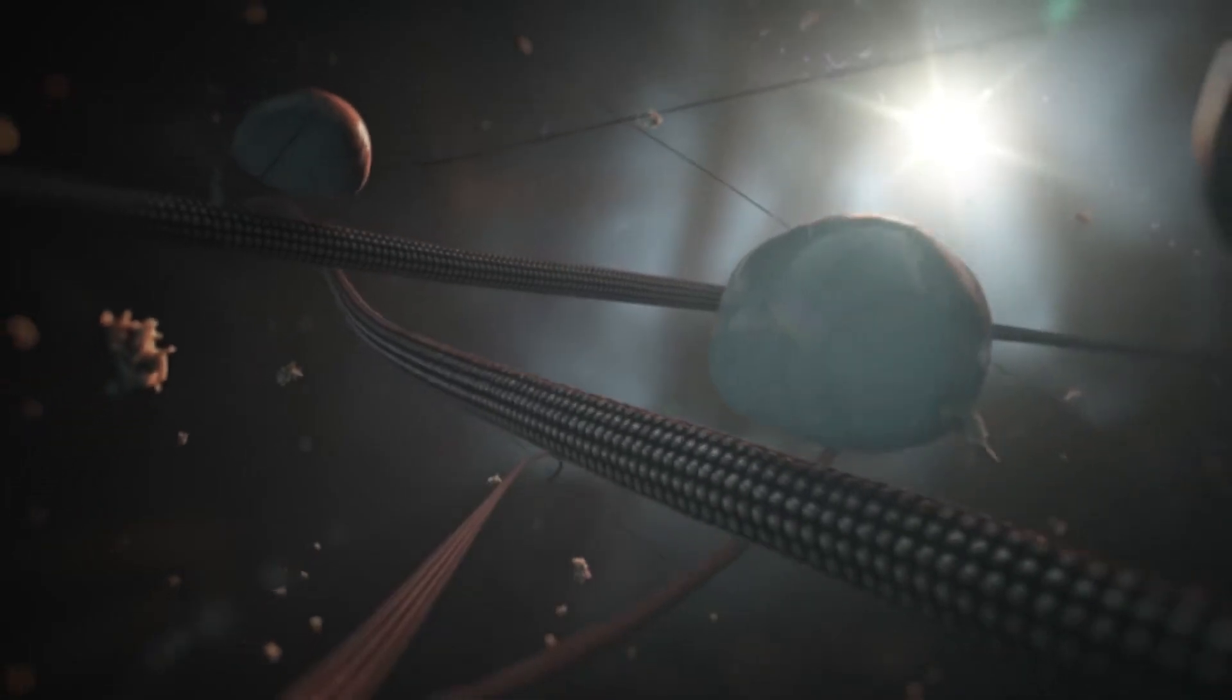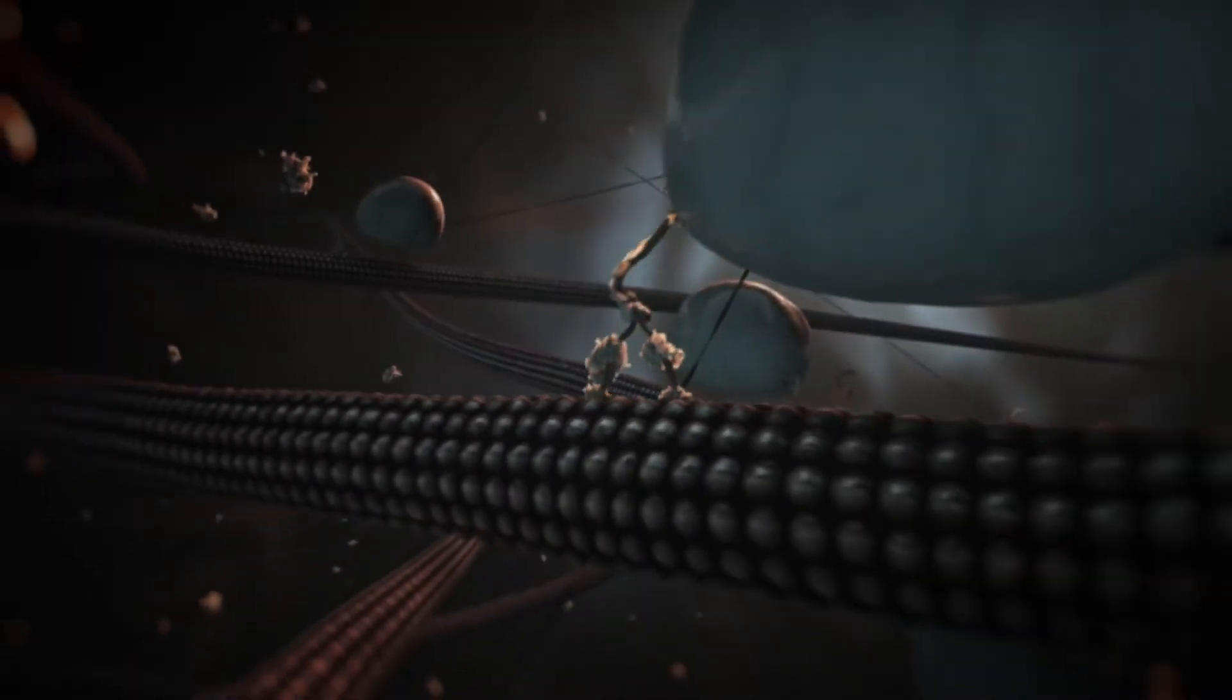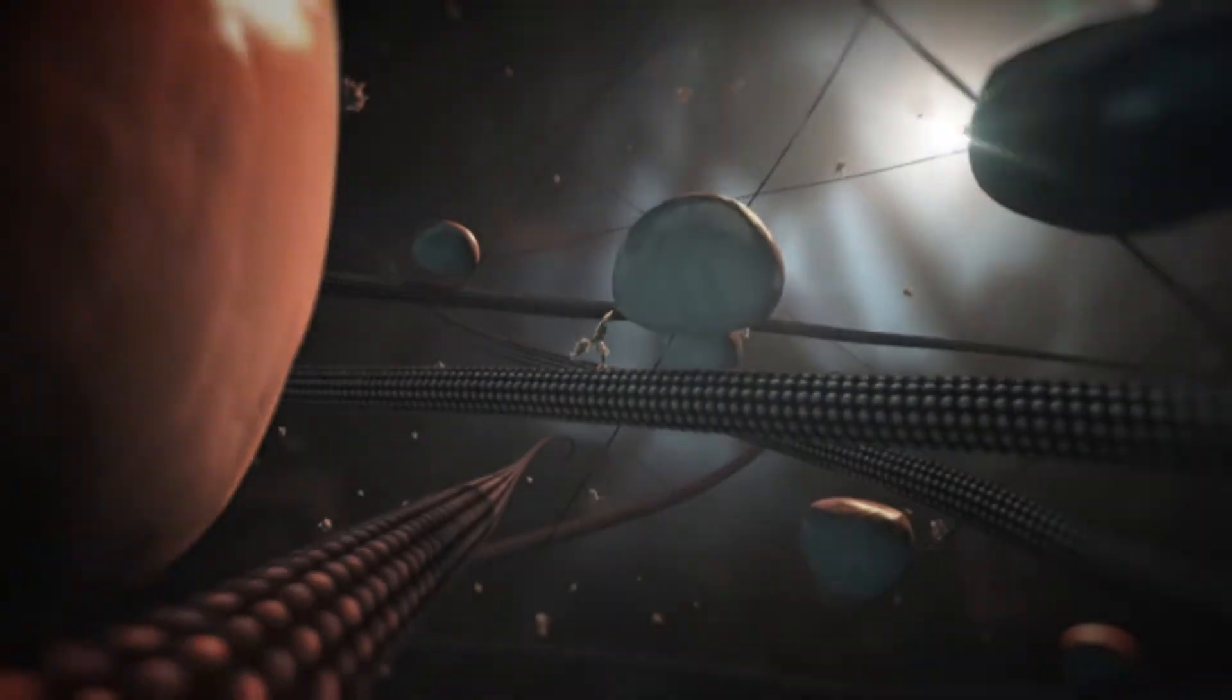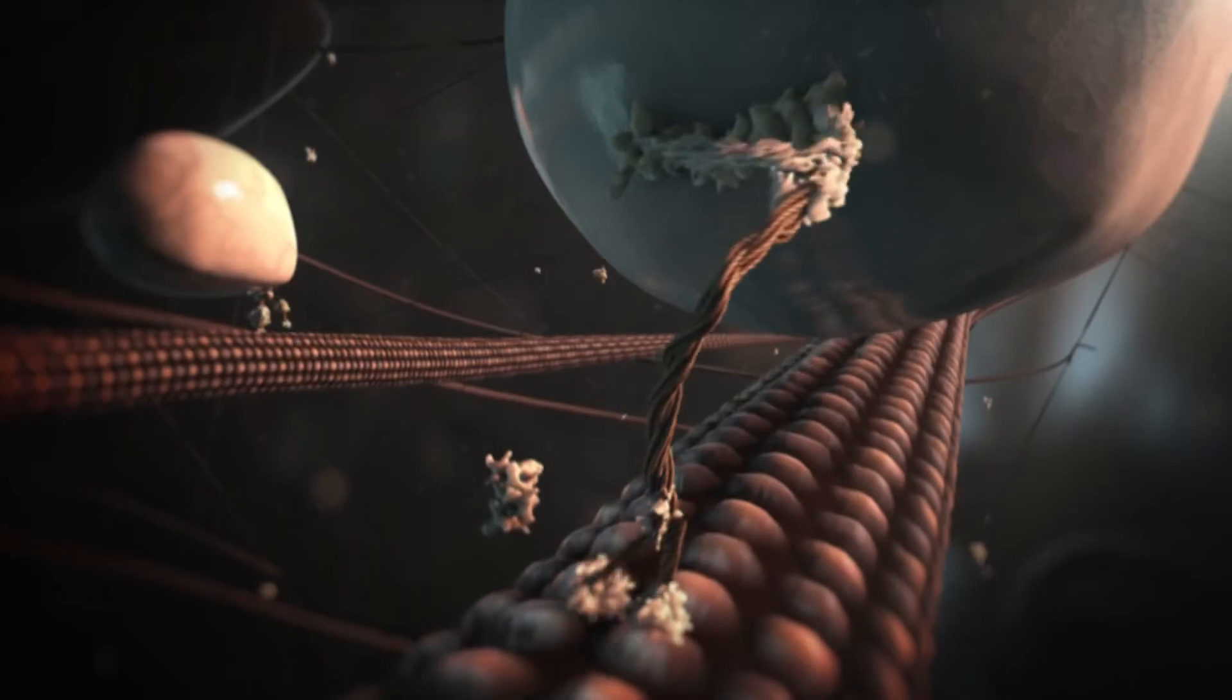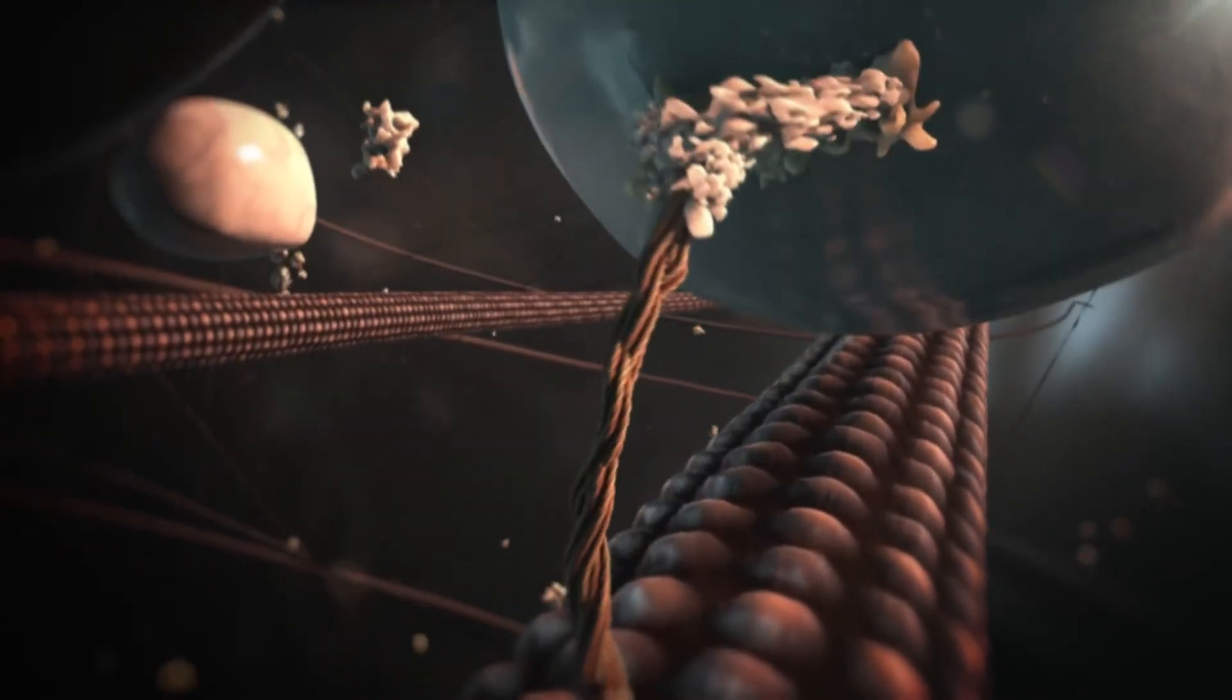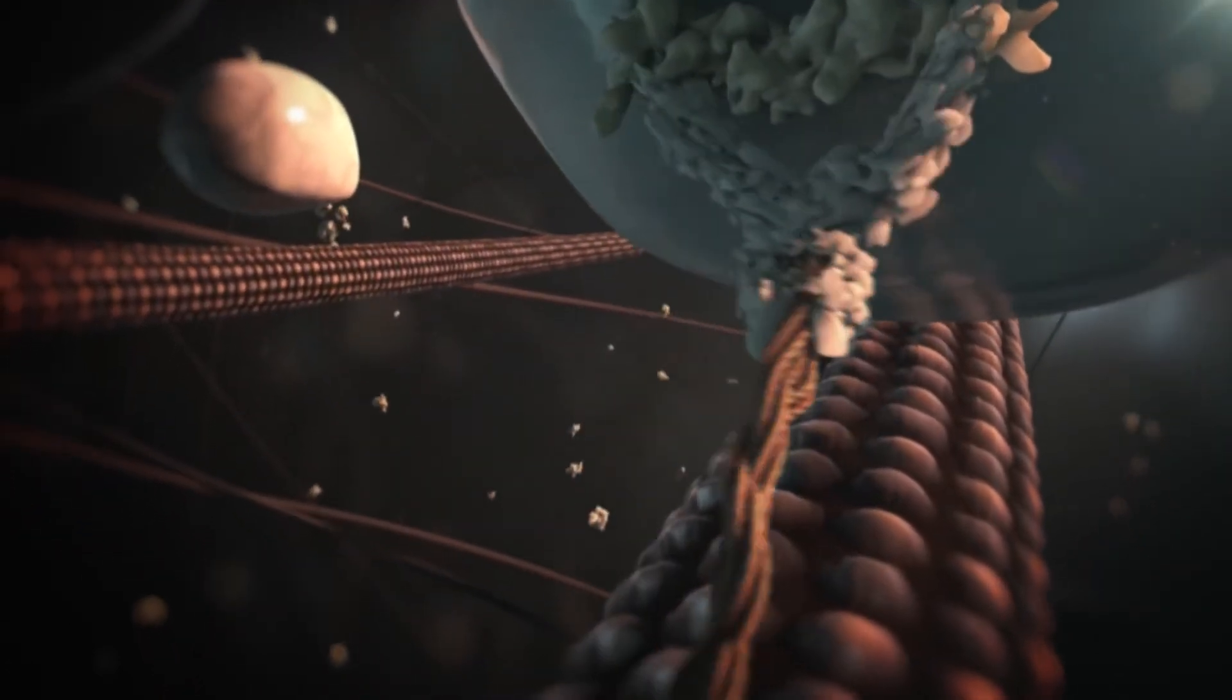Two types of motor protein, kinesins and dynein, transport cargos along microtubules. Adaptor proteins help to couple the correct cargo with the right motor protein.